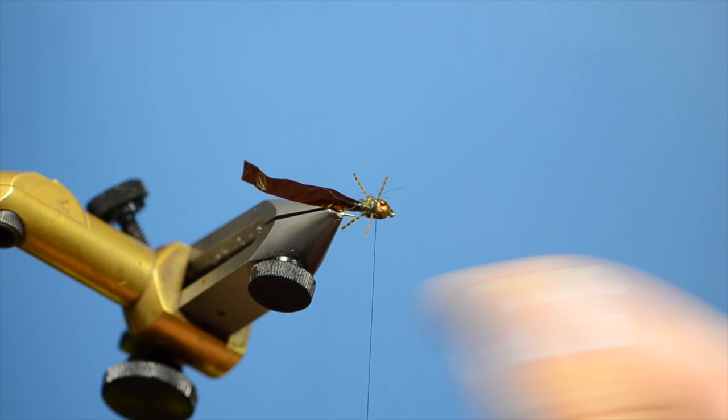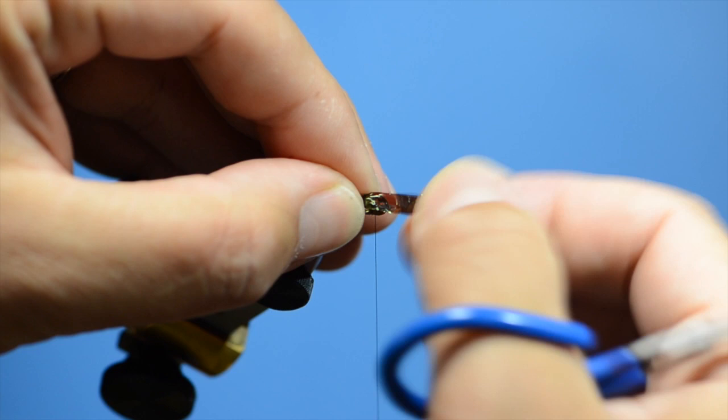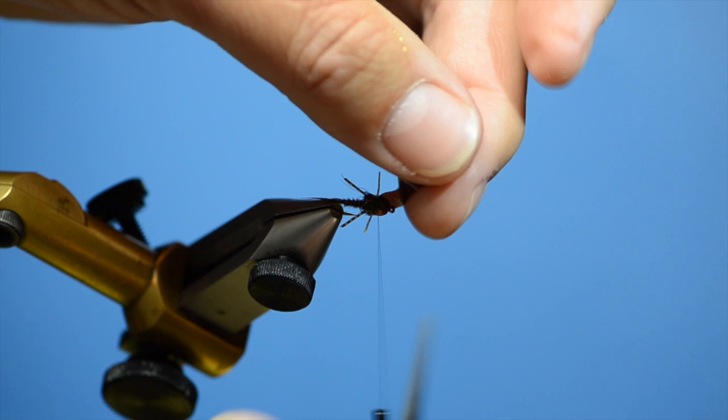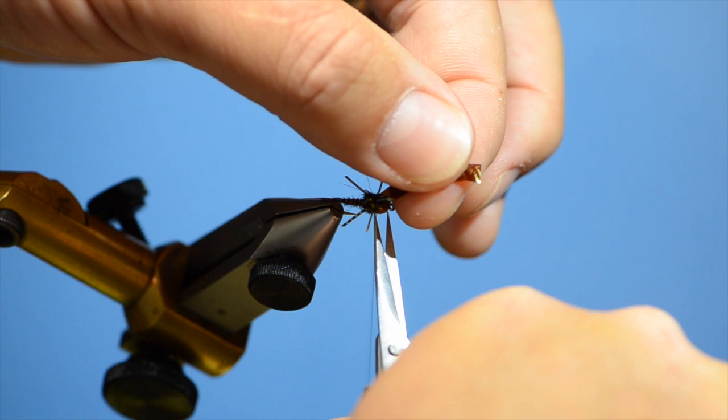Pull my wing case over. My wing case is set. One more wrap just to get it really tight in there and then I am going to trim this as close as I can.